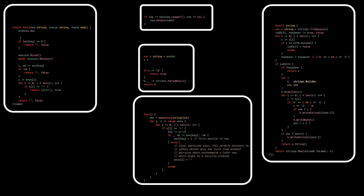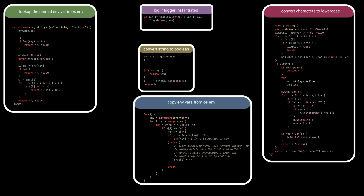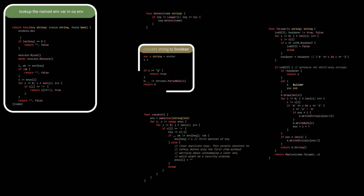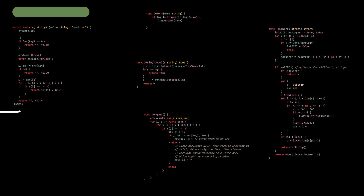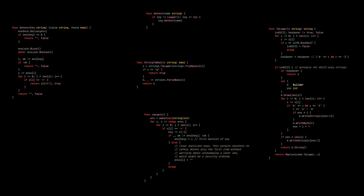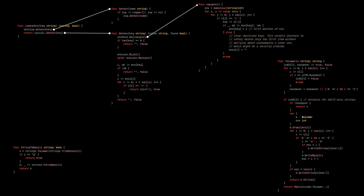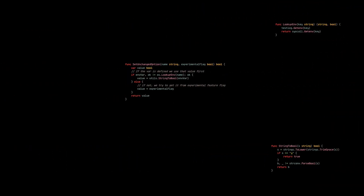Moving on to the next law — remember how you were able to understand what all of the complex logic was doing just by listening to my summary of each segment? Well, you can actually give that same type of summarization and understanding to the reader of your code through the way that you name your segments. So the second law of well-organized code is simply that segment names should summarize the segment's responsibility.